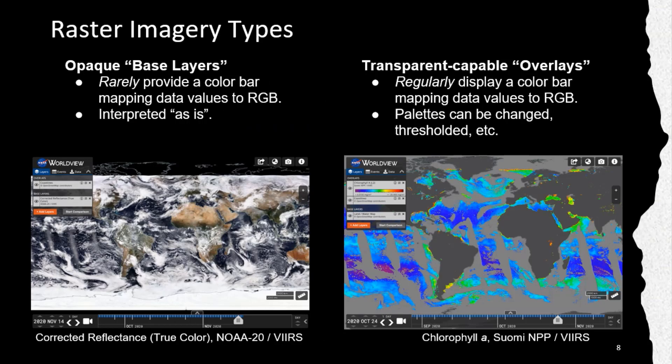There are two types of raster imagery: opaque base layers providing imagery as-is — for example, the corrected reflectance true color imagery from VIIRS on the NOAA-20 satellite — and transparent capable overlays, such as chlorophyll collected by the VIIRS instrument on the SNPP satellite. For overlays, thresholds and color bars can be changed. Worldview also supports visualization of vector data — static features such as points, lines, and polygons — and associated metadata and attribute information can be viewed for user analysis.